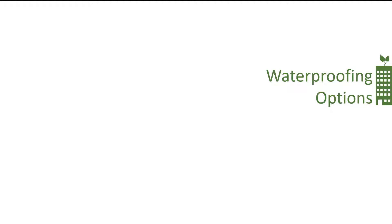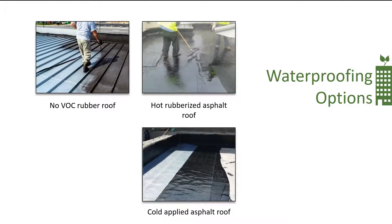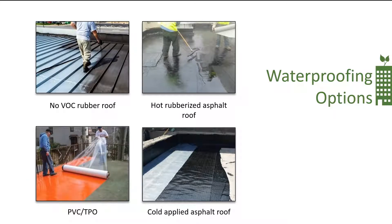Now we're going to go over some waterproofing options. Depending on the roof deck type, whether it's concrete, steel, or wood, we have options that are compatible under green roofs. A no-VOC rubber roof is a popular spray that's used easily as a second roof layer over an existing membrane. Hot and cold applied rubberized asphalt are common waterproofing systems throughout Division 7 and are designed to have water standing on them. Single ply roofs, such as PVC and TPO, are inherently root resistant, making them good options as well.